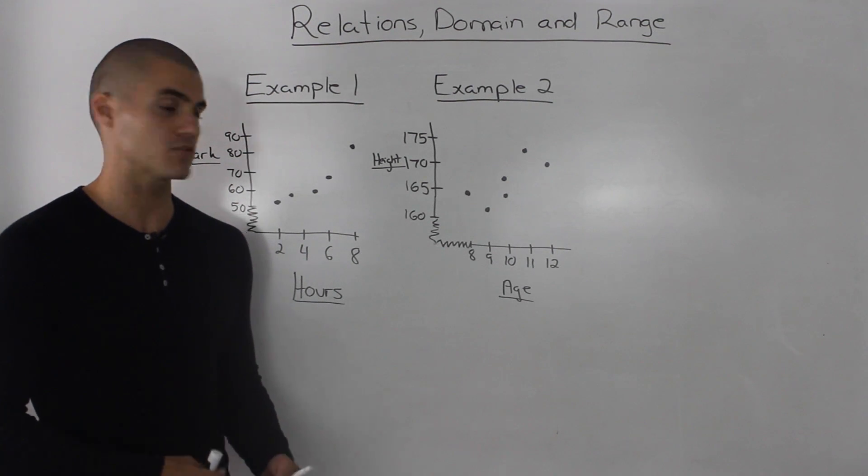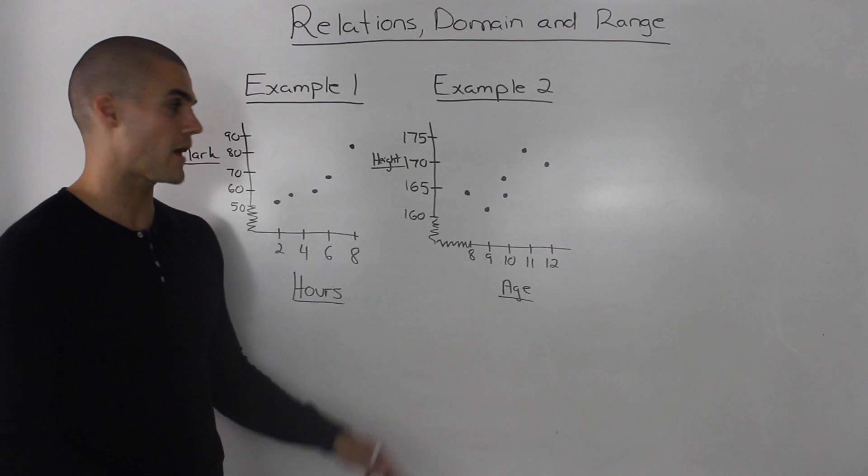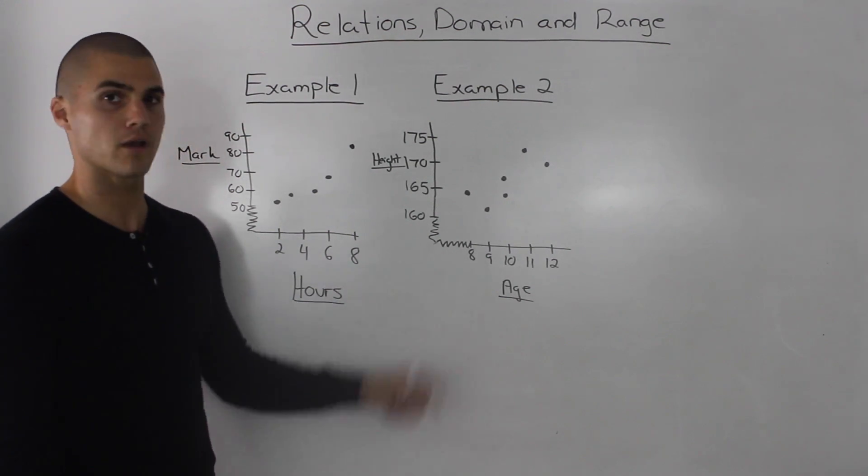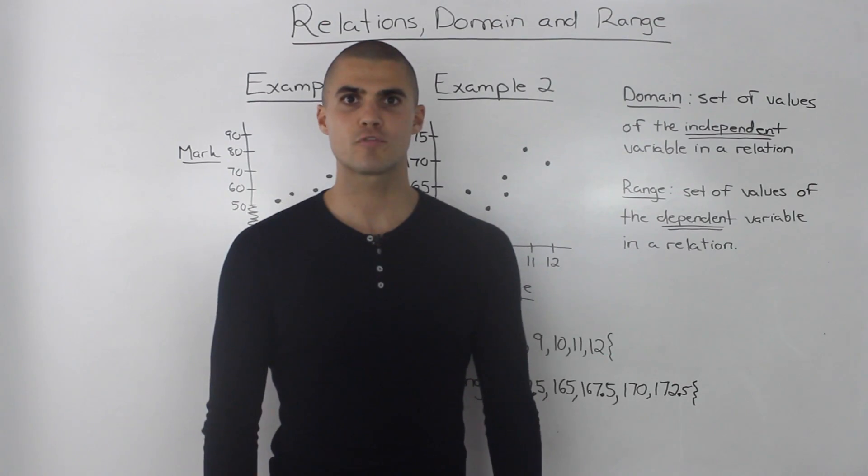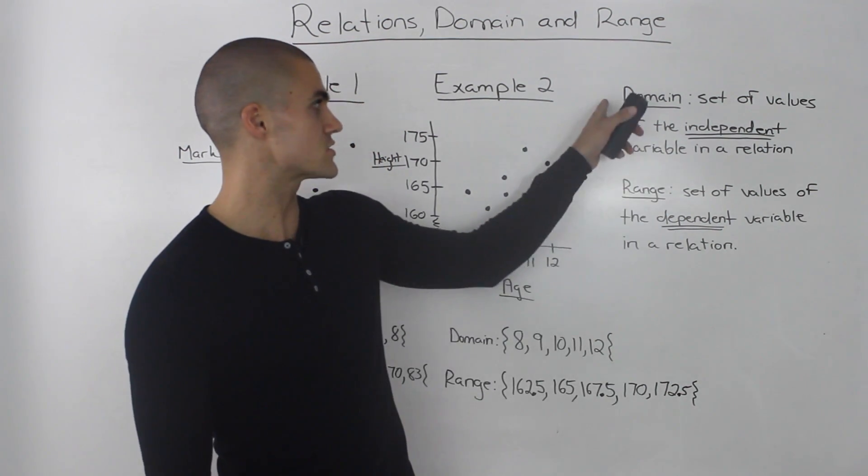In both examples, we took a relation and showed it in four different ways: first was a table of values, second was a list of coordinates, third was a mapping diagram, and fourth was a graph. Before finishing the video, I want to go over two more concepts, and that's domain and range.